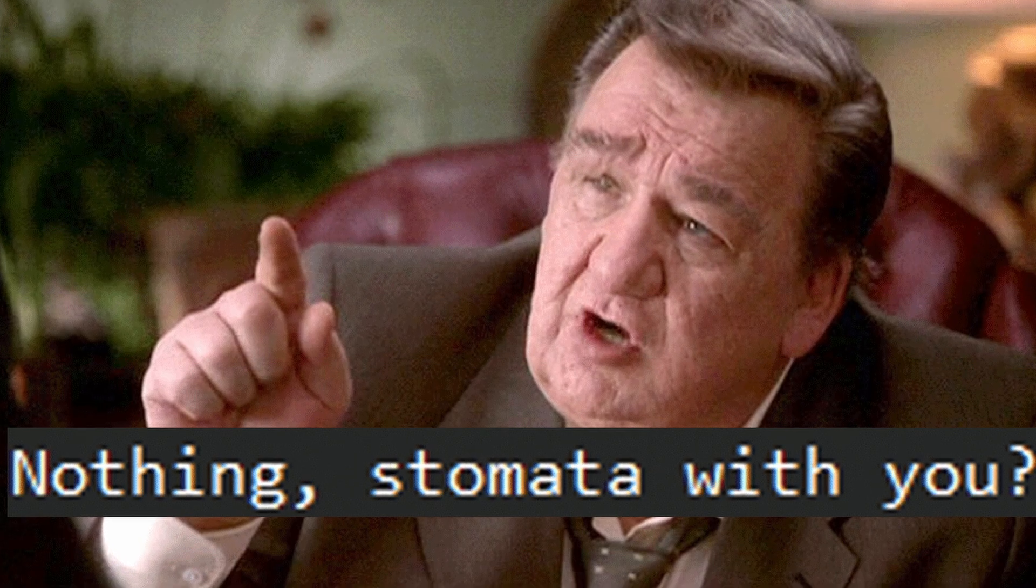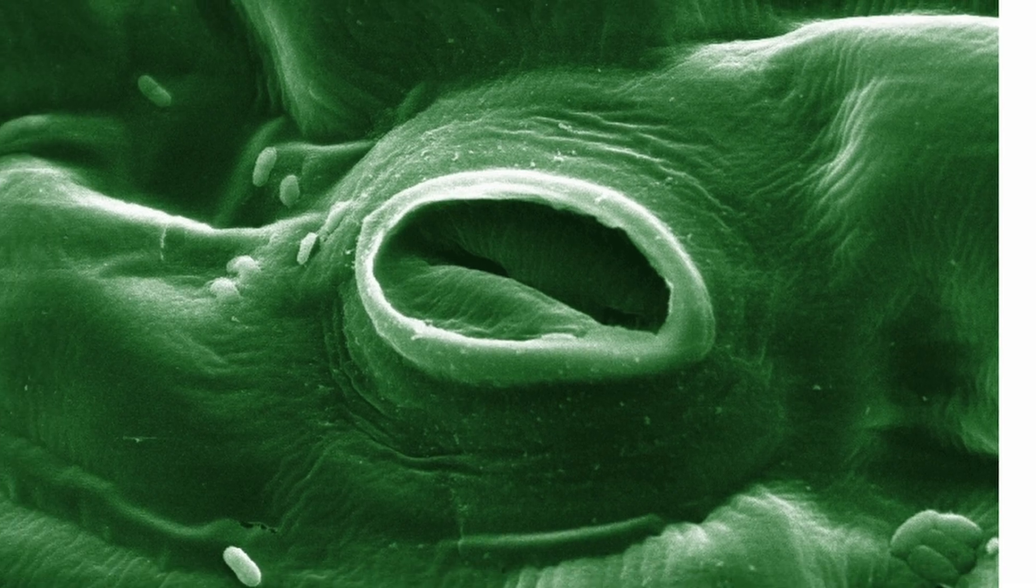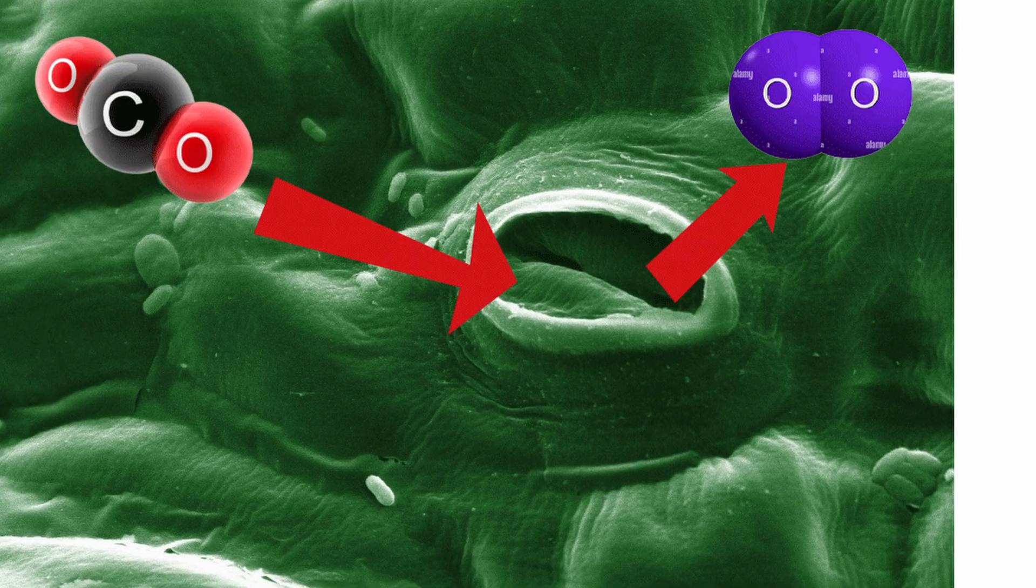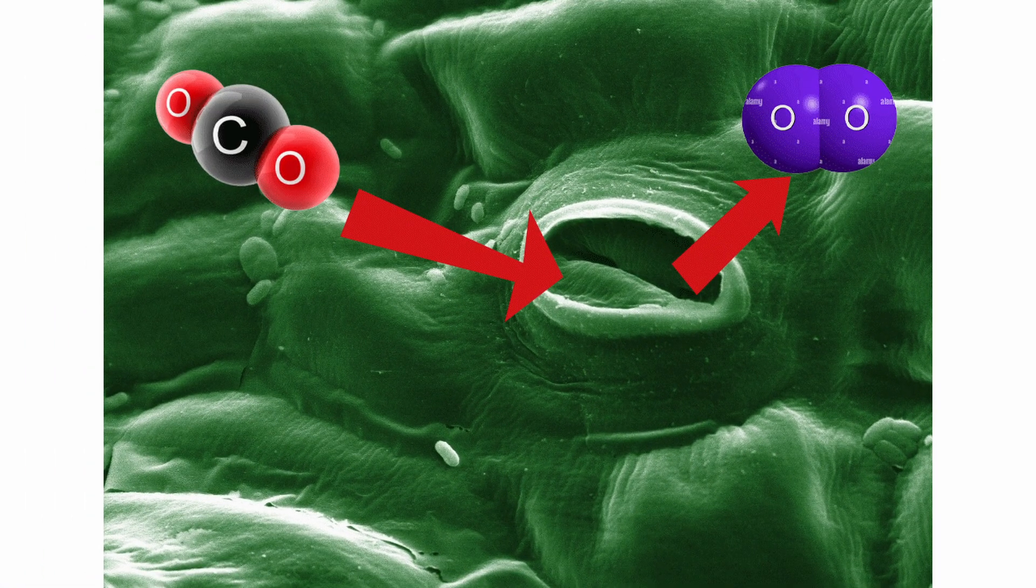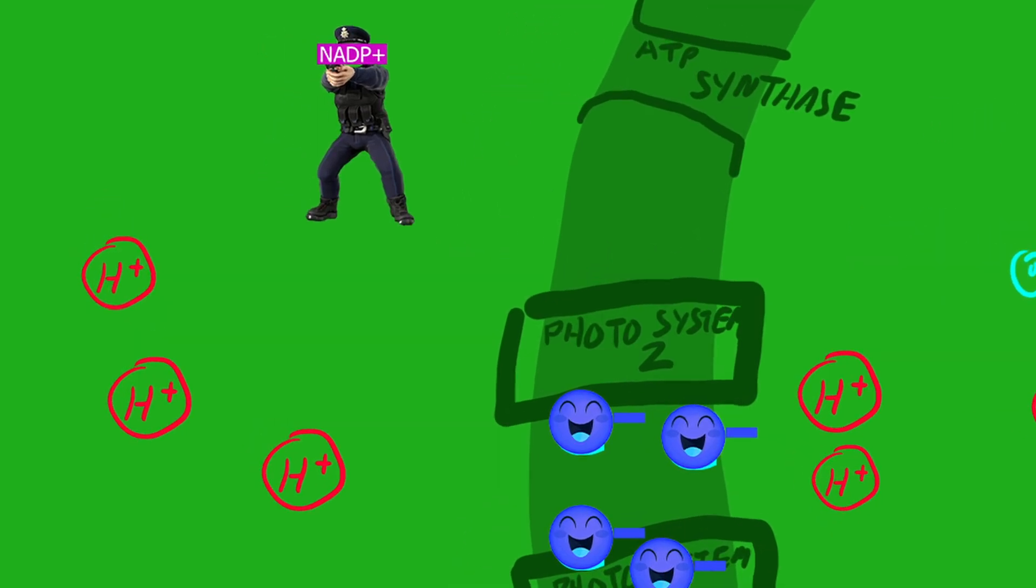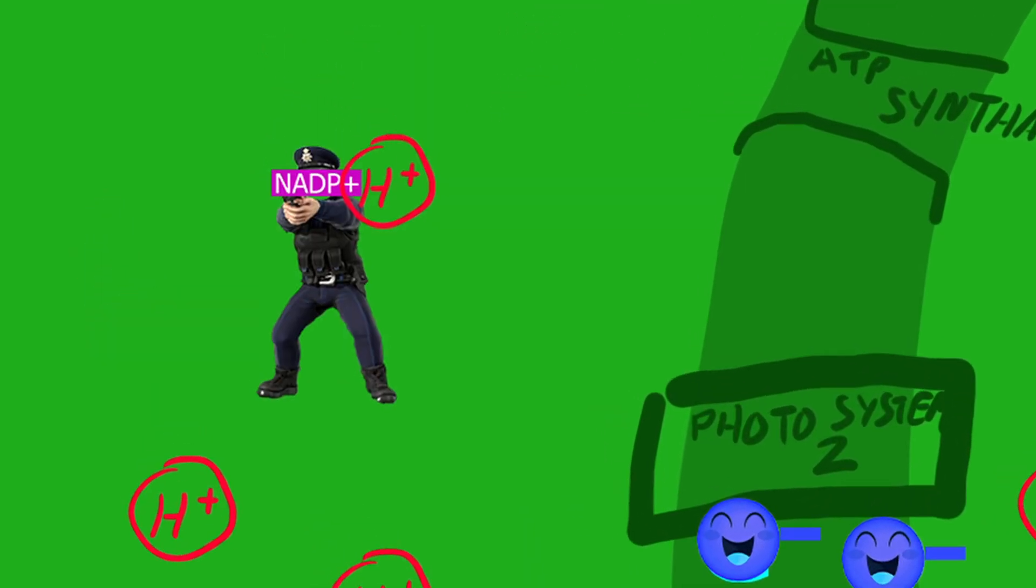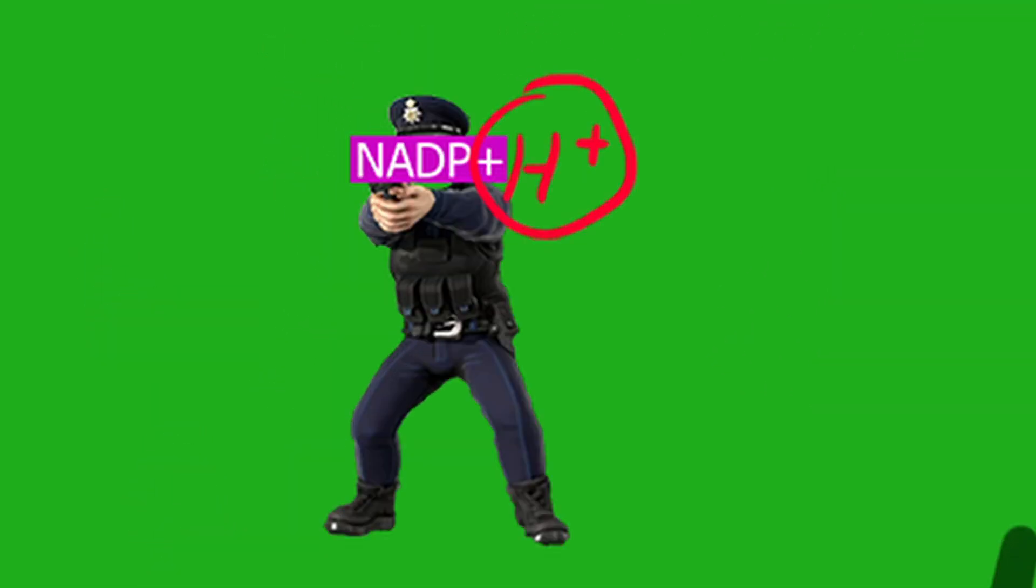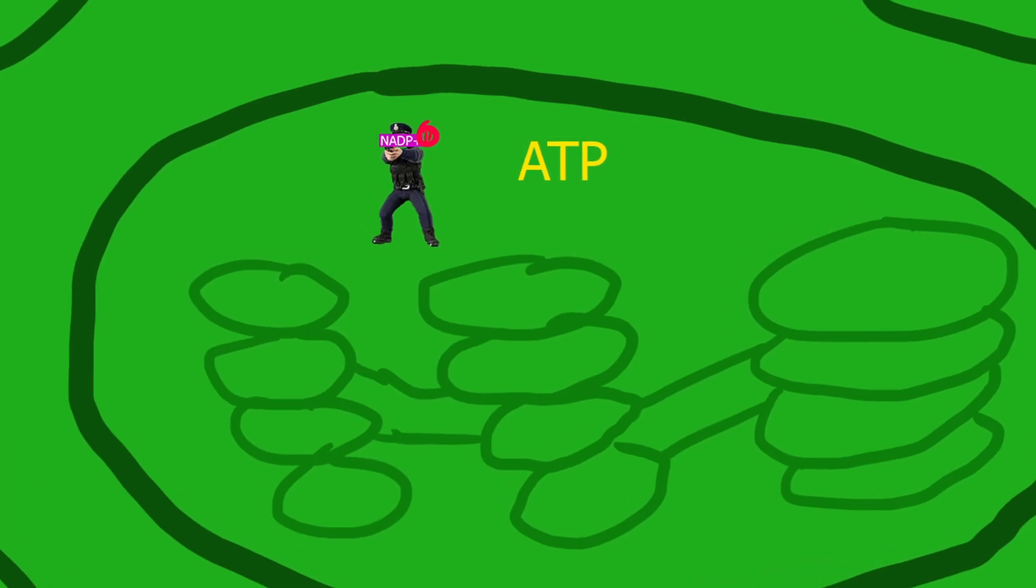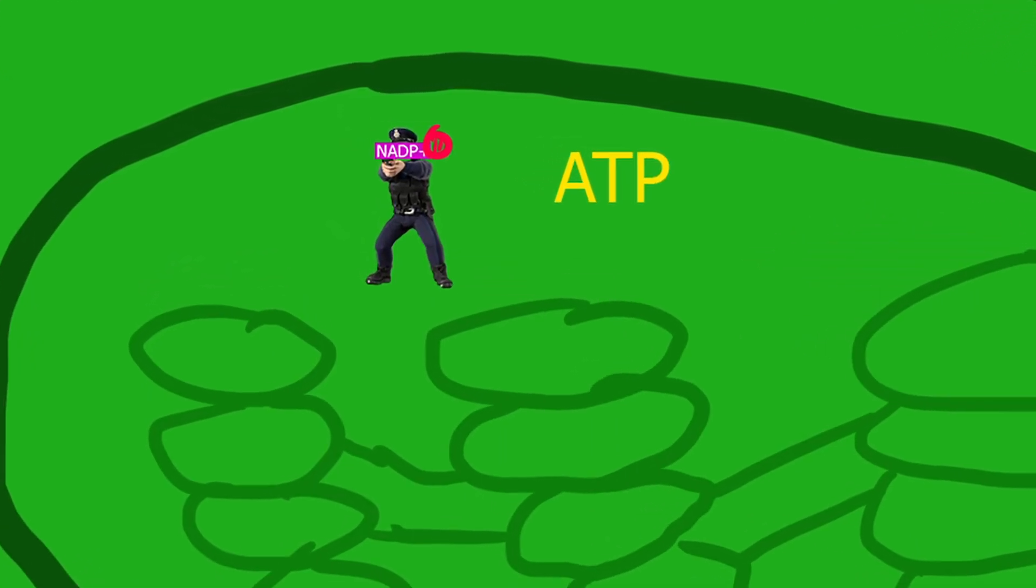Stomata! No, stomata, as in the pores through which gases are exchanged with the atmosphere. You got your CO2 going in and your oxygen coming out. NADP+ likes to bind with hydrogen outside the thylakoid and becomes NADPH, which is apparently important. NADPH and ATP are just kind of chilling in the stroma, and then the light-independent phase begins.